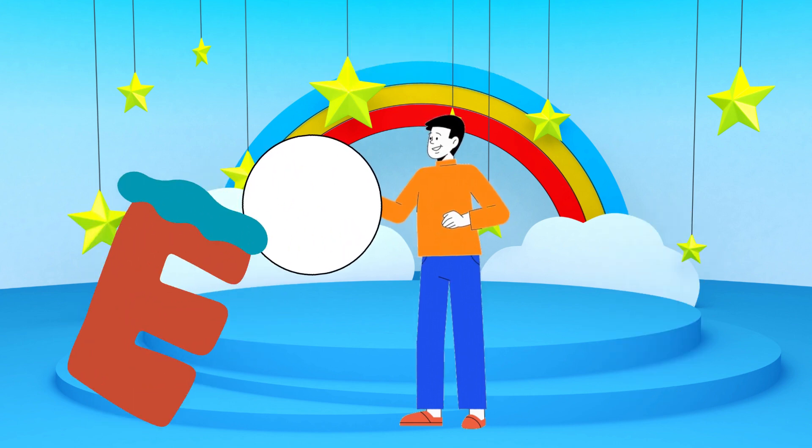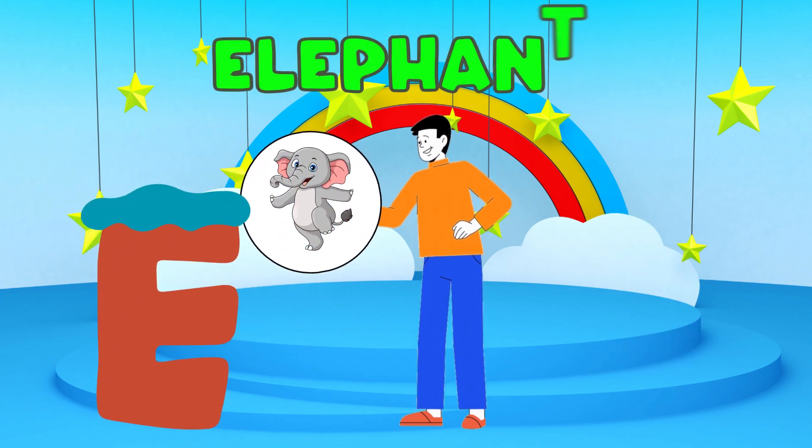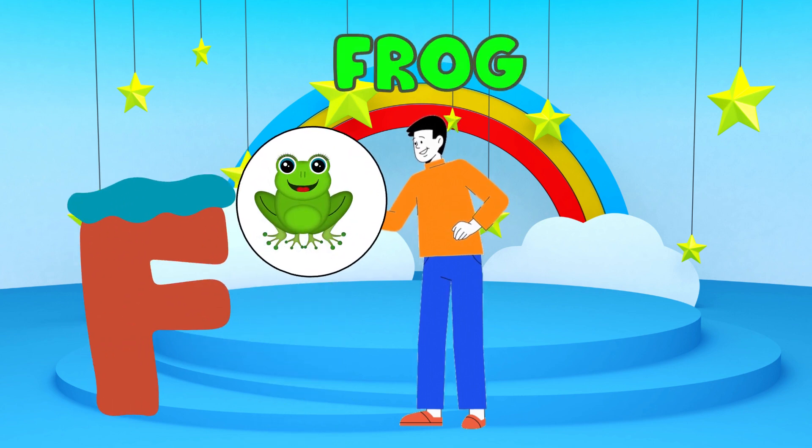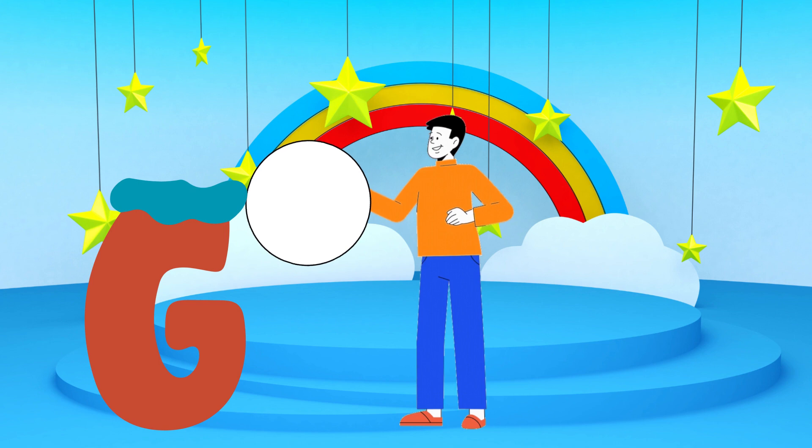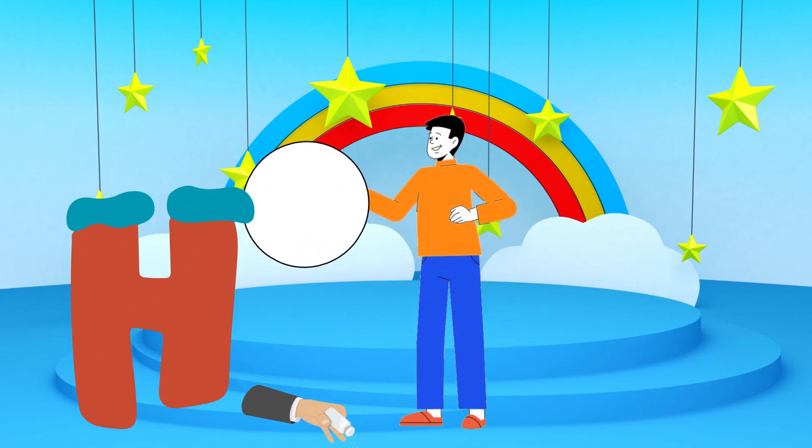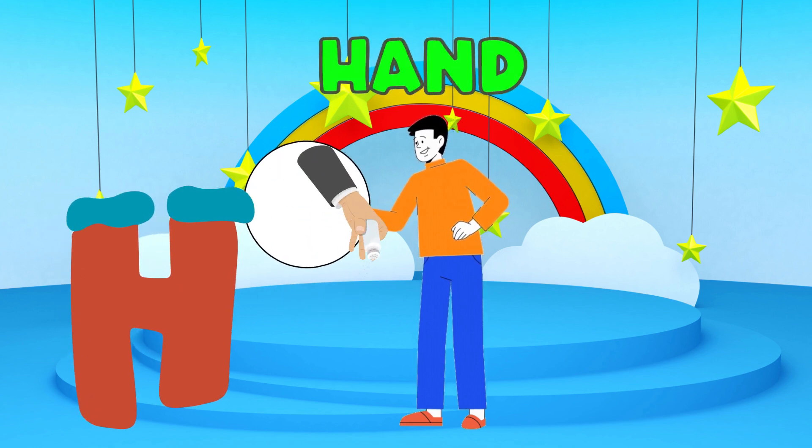E is for elephant, e-e-elephant. F is for frog, f-f-frog. G is for goat, g-g-goat. H is for hand, h-h-hand.